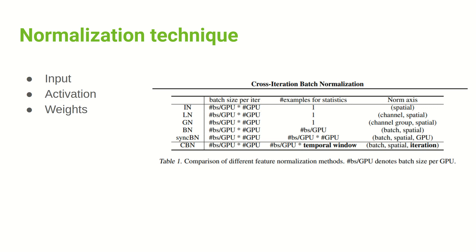These techniques have pros and cons and cross different domains. Looking at the last column — the norm axis — it tells you what axis is normalized across. For batch normalization, it calculates across the batch size, which is exactly what other techniques try to avoid when memory is limited. The famous group norm tries to cross channel-wise information instead of requiring a larger batch, so you can use a single image and do normalization. Group norm has very good performance; however, its drawback is that it's slow during inference time.